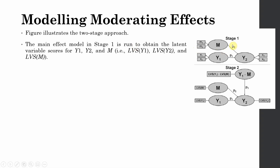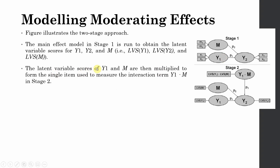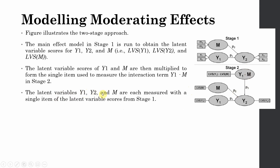In the main effect model in stage one, we only have the IV exogenous variable and the moderating variable impacting the endogenous variable. We run this to obtain the latent variable scores for Y1, Y2, and M. The latent variable scores of Y1 and M are then multiplied to get a single item used to measure the interaction term. In stage two, all constructs are measured using a single item — the latent variable score from stage one.